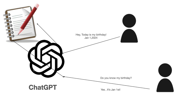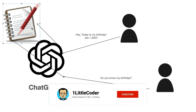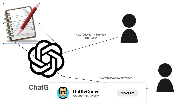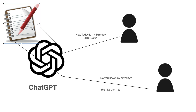ChatGPT is getting a mini notebook which it can use to remember things. With the new memory feature, if you go to ChatGPT on January 1st 2024 and tell it today is your birthday, ChatGPT will take a small note of your birthday because it thinks it's an important event. It knows it's something it has to store. Then, maybe one year later or six months later, you ask 'do you know my birthday?' and ChatGPT responds saying yes, because it's January 1st — and that knowledge comes from the notebook.